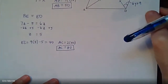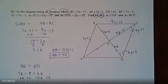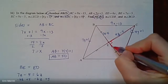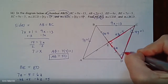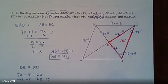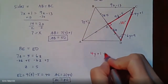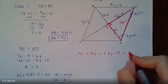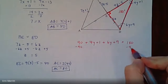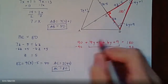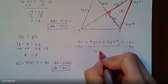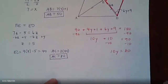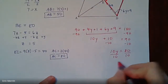Now for the angles with the y-variable. Because it's a rhombus, the diagonals are perpendicular, creating a right angle at the center. In that right triangle, the three angles must sum to 180: (4y + 1) + (6y + 9) + 90 = 180. Simplifying, 10y + 10 = 90, so 10y = 80, giving y = 8.